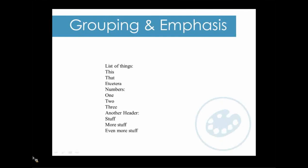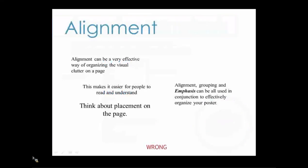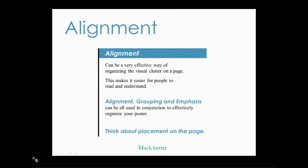Here is a list of things you might present that runs all together. Make it easier to digest by grouping like things and emphasizing key points. Physical closeness implies relationship. Emphasis calls attention to important points — do not be afraid to make certain text big and bold. Here is an example of an issue seen frequently in scientific posters: sections are placed without aligning them or having spatial relationships with other objects on the page. Remember your initial grid — let it help you keep things aligned. See how aligning everything makes it look better and easier to follow.